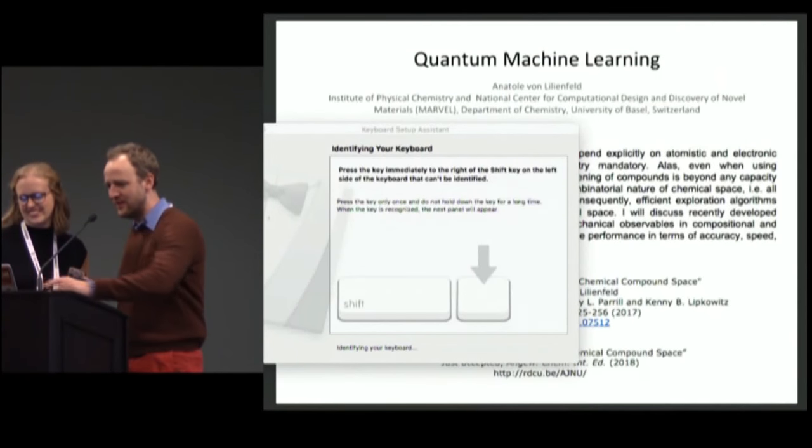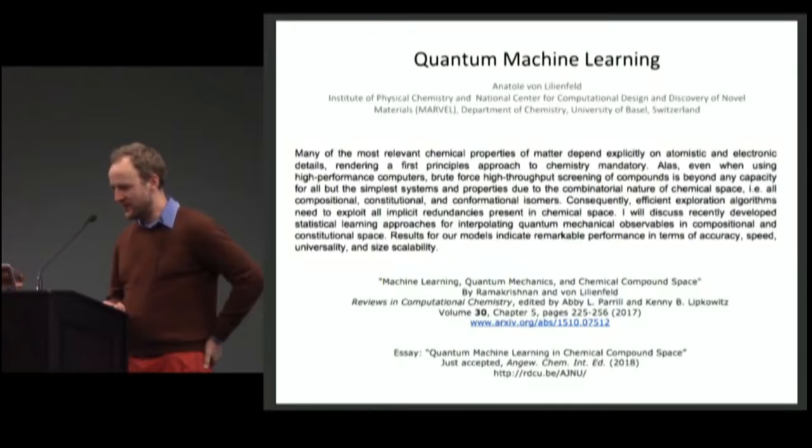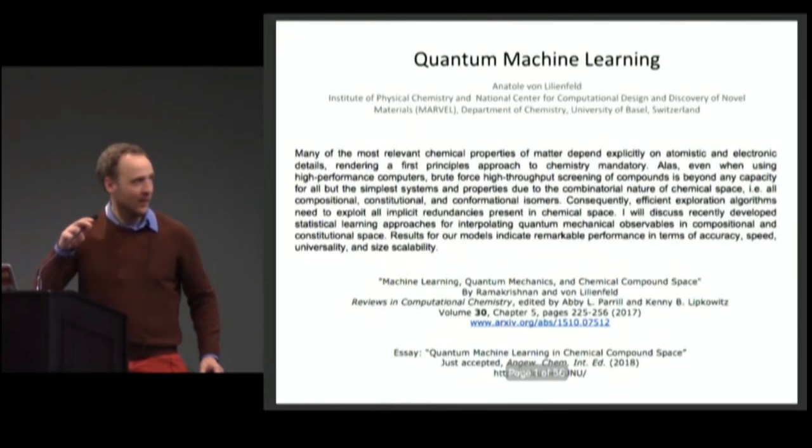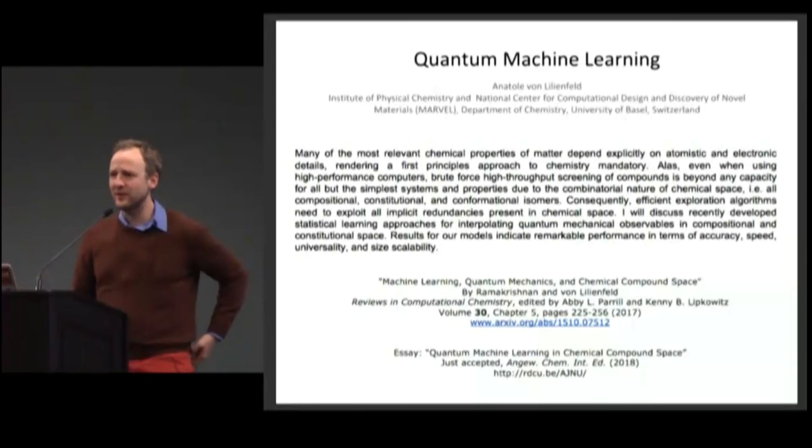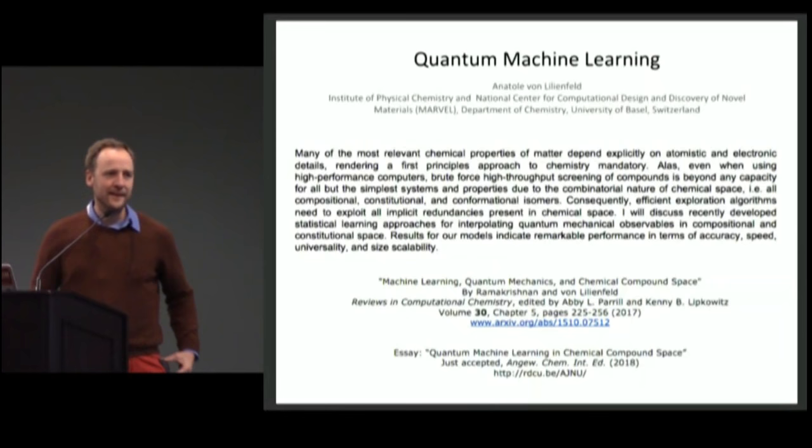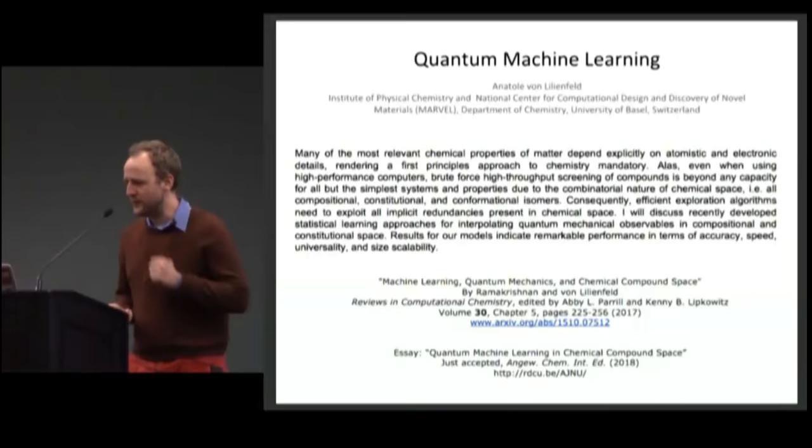Okay, so we use classical machine learning models to model quantum properties of matter, particularly chemistry. It's an interesting field because it's dictated by the physics of the valence electrons, which are quantum objects. The equations you need to solve are quantum mechanical equations, and we try to use machine learning to do that.